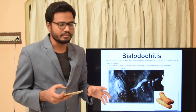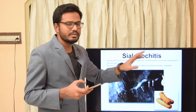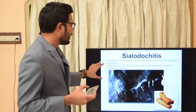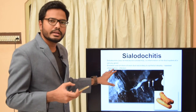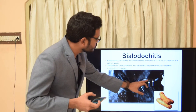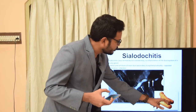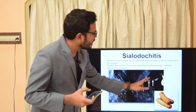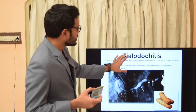Another important sialographic image is the sausage-linked appearance, seen in sialodochitis. Sialodochitis is inflammation of the ductal system of the salivary gland. There is dilatation and stricture or constriction of the main duct secondary to epithelial atrophy because of repeated inflammation or infection. As seen in the image, there is dilatation of the salivary duct in one portion, constriction in the next, and again dilatation — giving the sausage-linked appearance, resembling linked sausages.